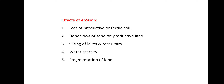The effects of erosion include: soil erosion reduces cropland productivity and contributes to the pollution of adjacent water courses, wetlands, and lakes. Soil erosion can be a slow process that continues relatively unnoticed, or can occur at an alarming rate, causing serious loss of topsoil. Key effects are loss of productivity or fertile soil, deposition of sand on productive land, silting of lakes and reservoirs, water scarcity, and fragmentation of land.